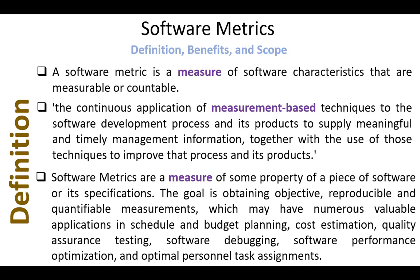There are several definitions of software metrics. One of them: a software metric is a measure of software characteristics that are measurable or countable. Another definition: the continuous application of measurement-based techniques to the software development process and its products to supply meaningful and timely management information, together with the use of those techniques to improve that process and its products. And a third definition: software metrics are a measure of some property of a piece of software or its specifications.